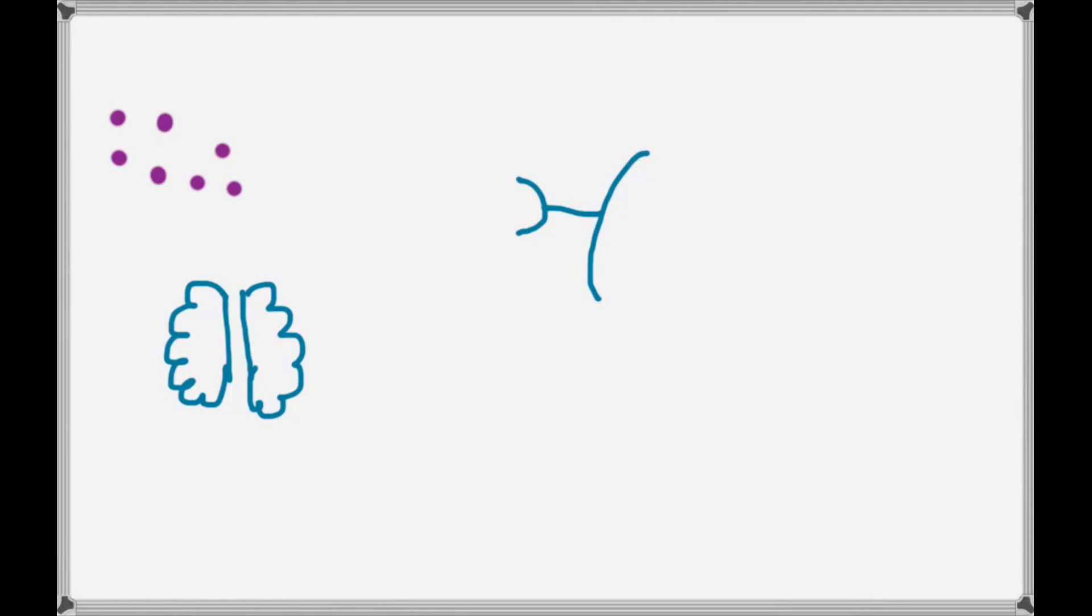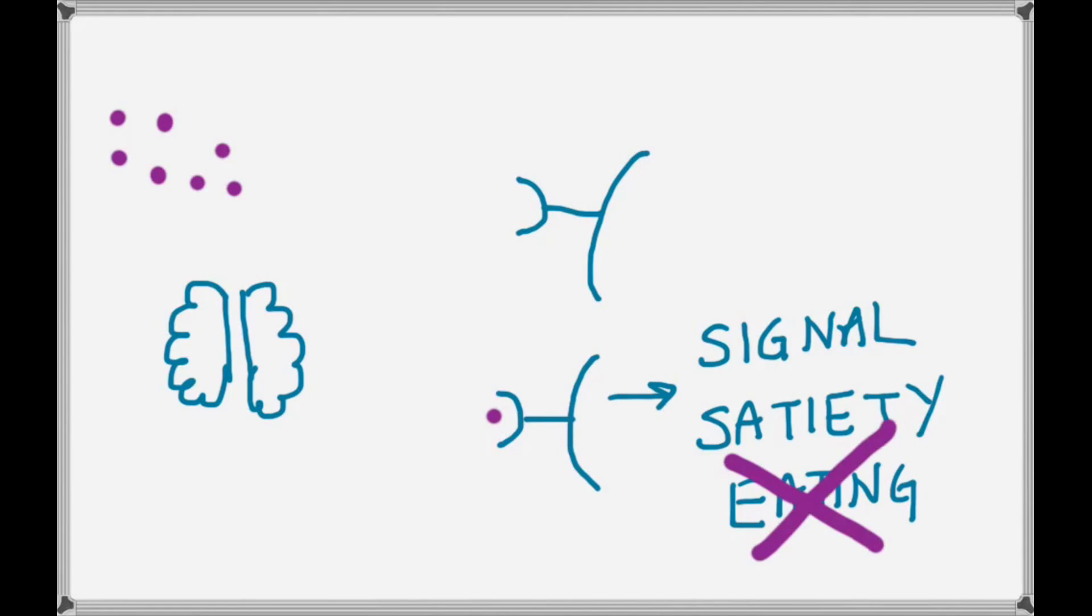So there are cells in the hypothalamus that on their surface have a leptin receptor. And when leptin binds its receptor, this sends a signal. And that signal is satiety, or a sense of fullness. And so when the mouse receives this signal of fullness, it won't feel compelled to eat or reduce its eating behavior because it feels full.